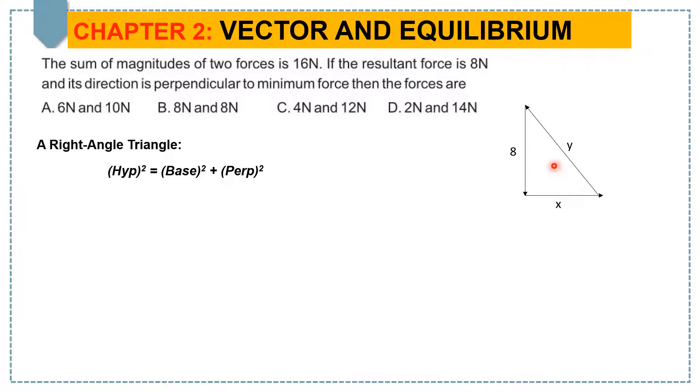So it means that we have a case like right angle triangle where 8 Newton is the perpendicular force to one of the minimum force and suppose that minimum force is X. And the hypotenuse we represent by Y.